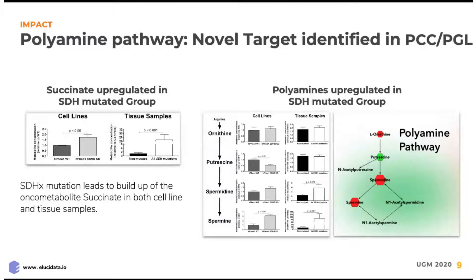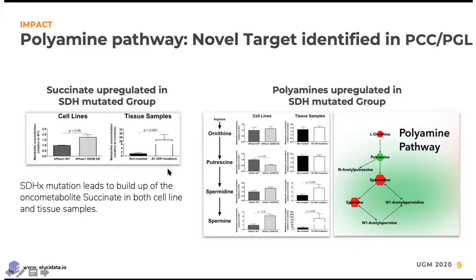What we found is that when we looked at the tissue samples with succinate dehydrogenase mutations, succinate levels were elevated. When we looked at the cell line data, we saw that succinate was also elevated — and we expected this. This is known, because as we look at the Krebs cycle going from succinate to fumarate, a succinate dehydrogenase mutation should cause succinate to rise. And we see that, so we knew we were on the right track.